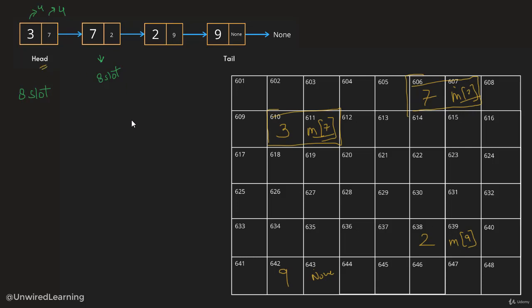The problem with linked lists is that we cannot directly access elements by index like with arrays. With an array, we go directly to index 0, 1, 2, or 3. But with a linked list, if we want the second-last element, we have to start from head, traverse 3 → 7 → 2 → 9, and backtrack — following the chain each time. This is going to be a key point when we discuss complexities in the next lecture.